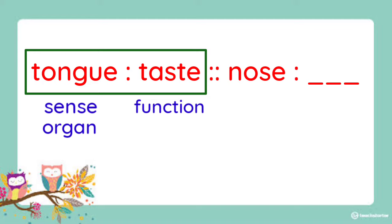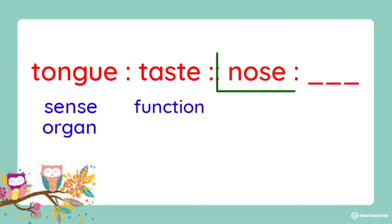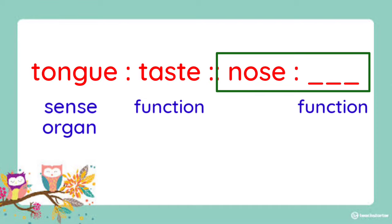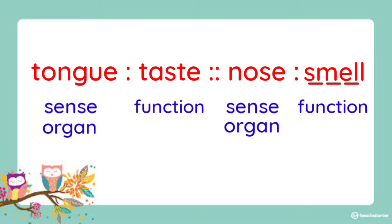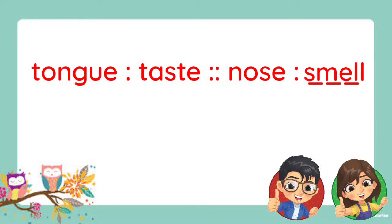Tongue is used to taste things, right? So, to identify the missing word, we have to think of the function of the nose. And it is to smell. That is to say, the complete set is: tongue is to taste as nose is to smell.